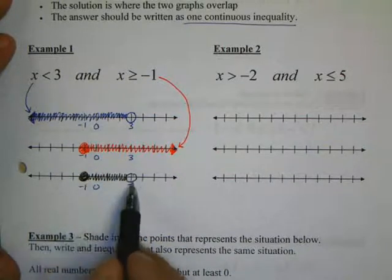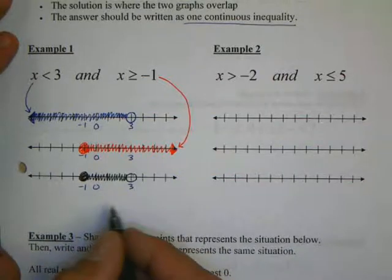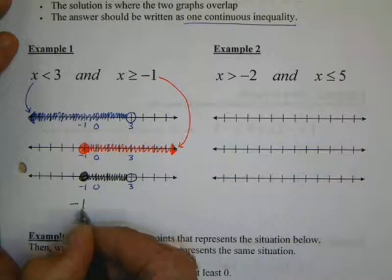I'm also going to fill in the number negative one. Because at negative one, it's filled in on this number line, and it's filled in on the blue number line.